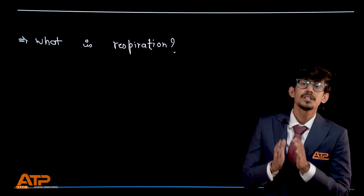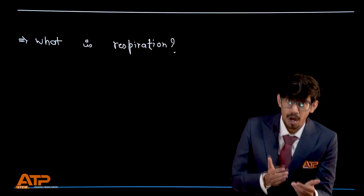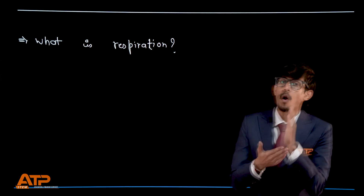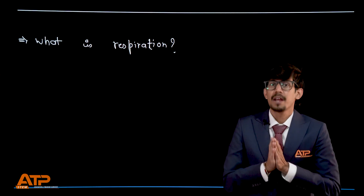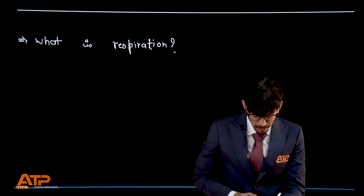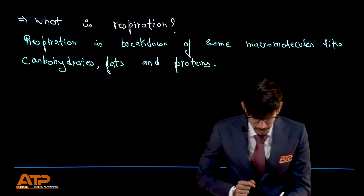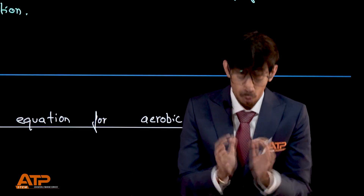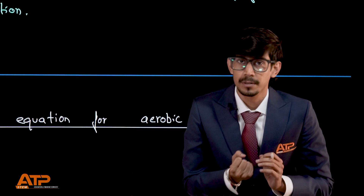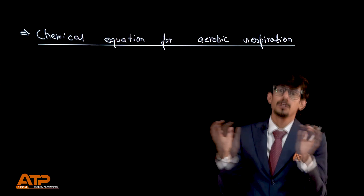Respiration is a process in which we extract energy from the food that we eat. When we eat food we get components like carbohydrates, fats, and proteins. Among these, we use mostly carbohydrates like glucose to extract energy. Carbohydrates are the preferred source — we will discuss why in future videos. So respiration is the breakdown of macromolecules like carbohydrates, fats, and proteins, with glucose being the preferred substrate.